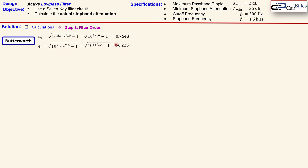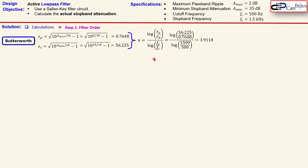Substituting 35 dB for A_min gives epsilon_s = 56.225. Taking these together and substituting into the Butterworth low-pass filter order formula — using the ratio of epsilon_s over epsilon_p inside a logarithm and the ratio of stopband frequency to cutoff frequency — we get 3.9118. Since we need integer values for circuit realization, we round up to n = 4 for the Butterworth filter.